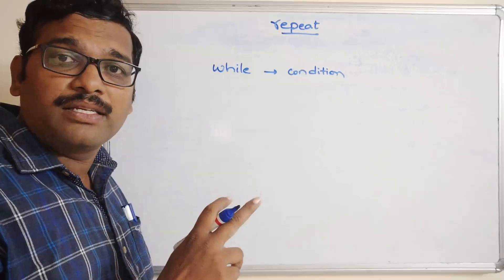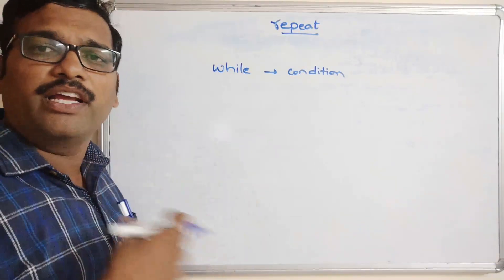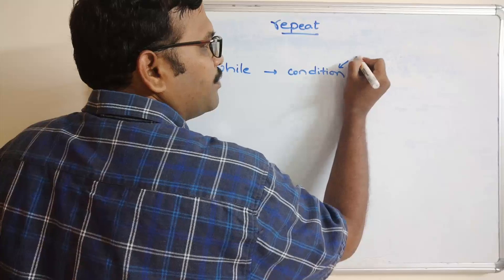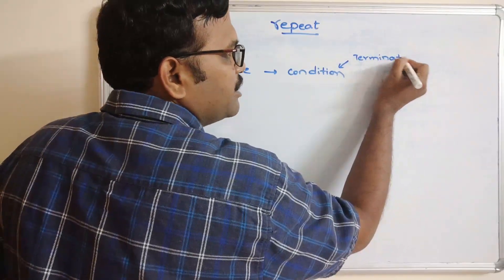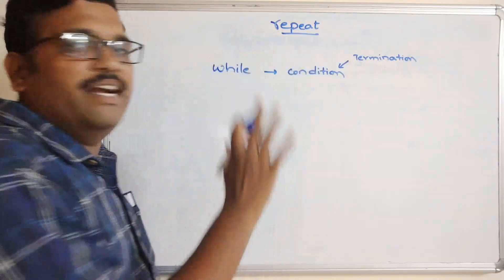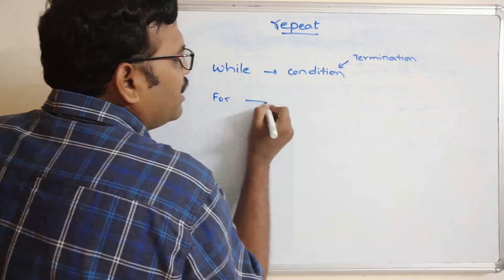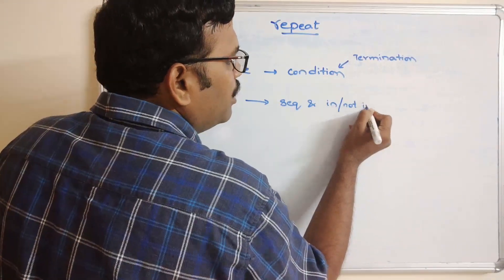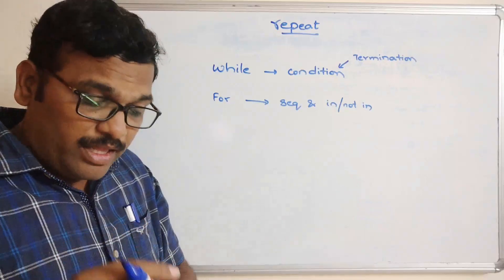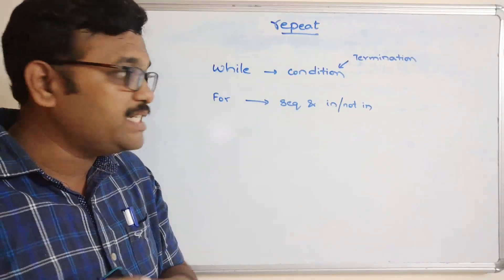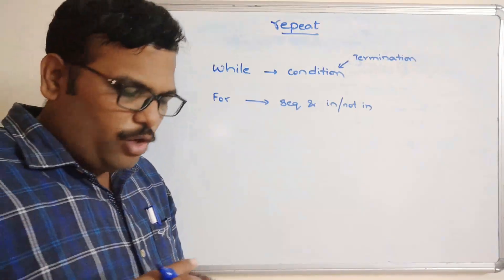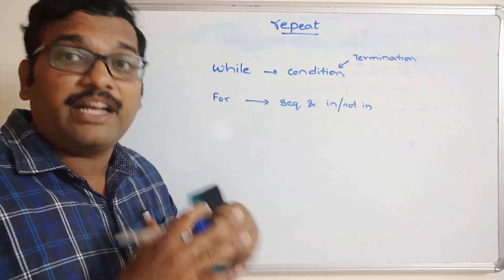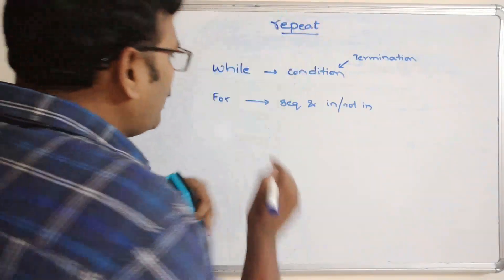In the while loop, the same set of instructions keeps executing until the condition becomes false — termination depends on that condition. In the for loop, we use a sequence and membership operator; termination depends on whether the loop variable holds a value within the sequence. When the loop variable goes out of the sequence, the iterations are terminated. Now, what is repeat?